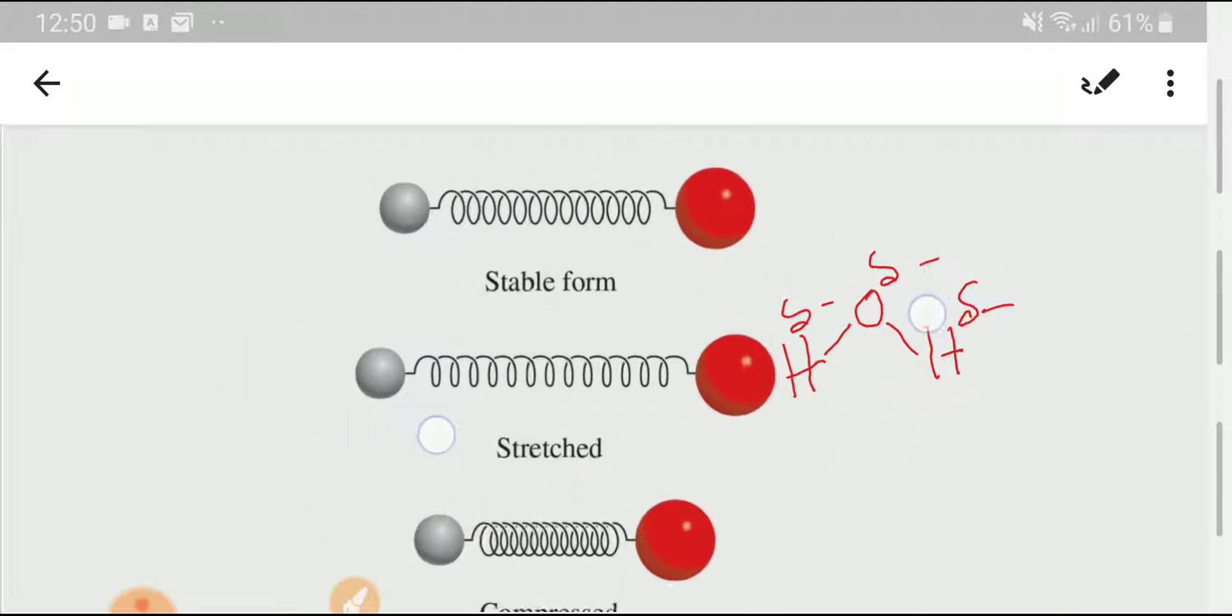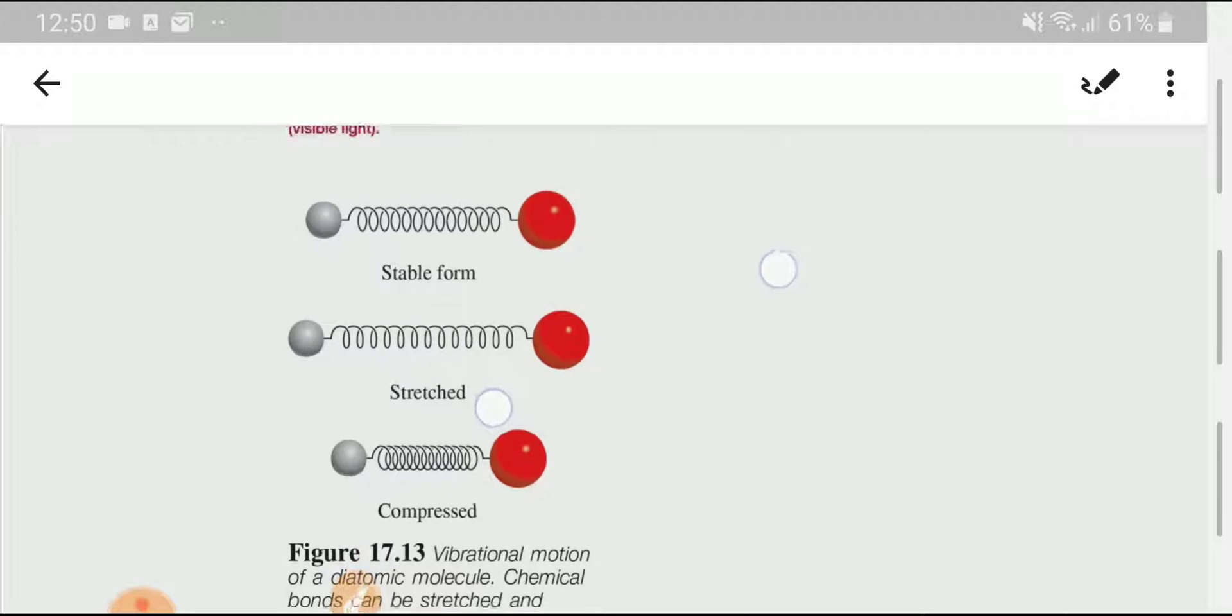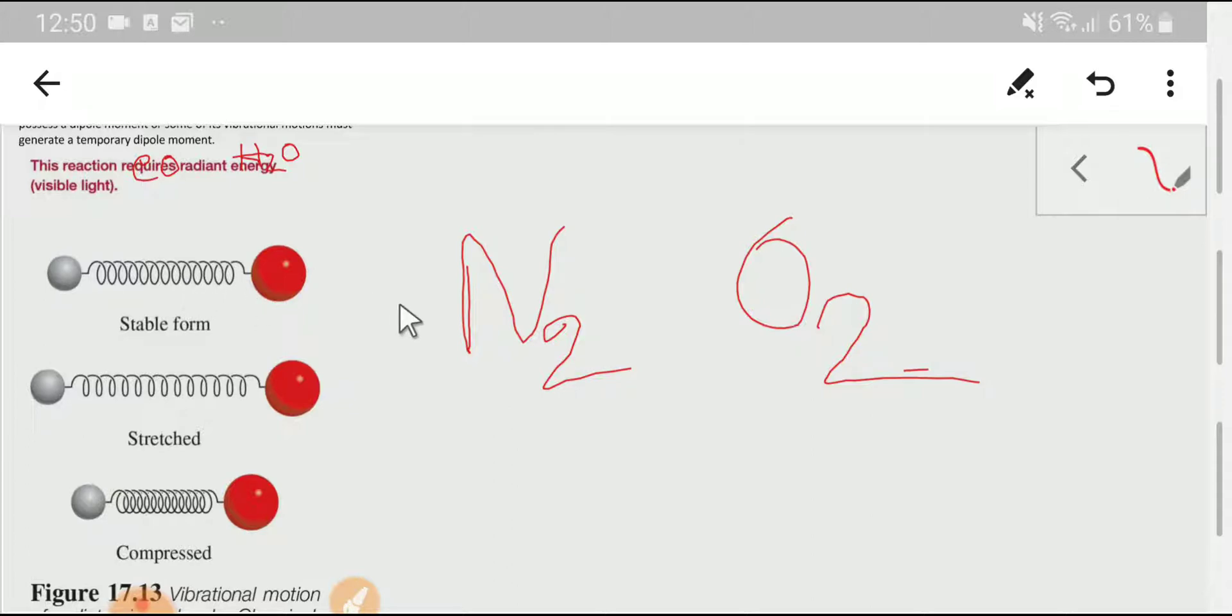Look at this picture. A diatomic molecule like nitrogen or oxygen. A homonuclear—homonuclear means two atoms are from the same element. This is the stable form. This is the chemical bond. We can consider a chemical bond like a spring.